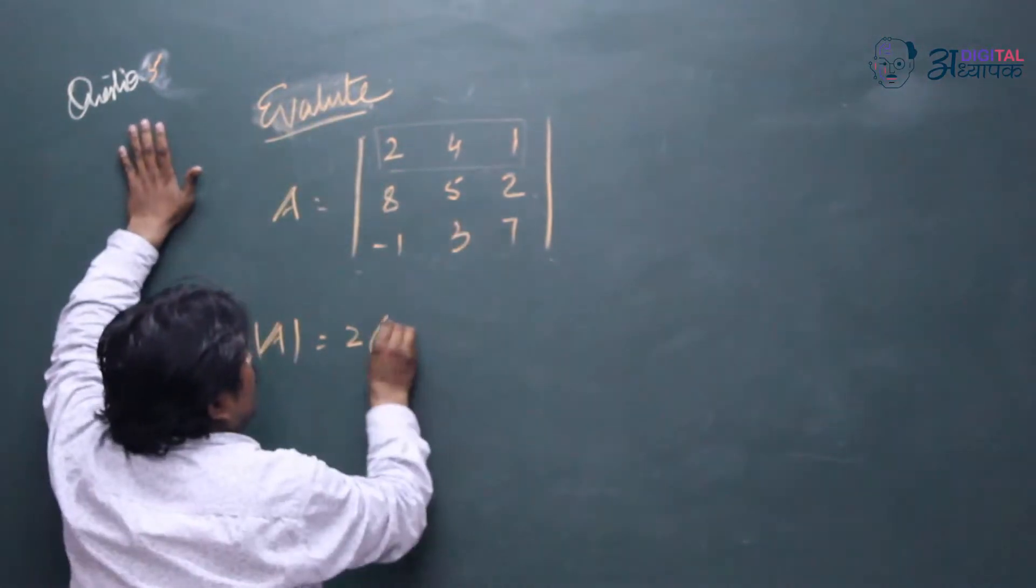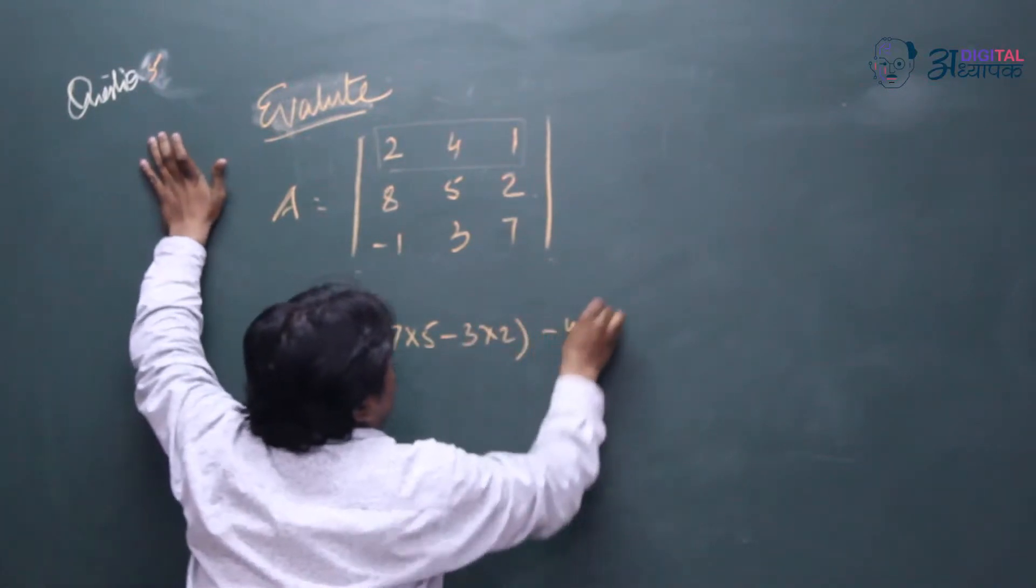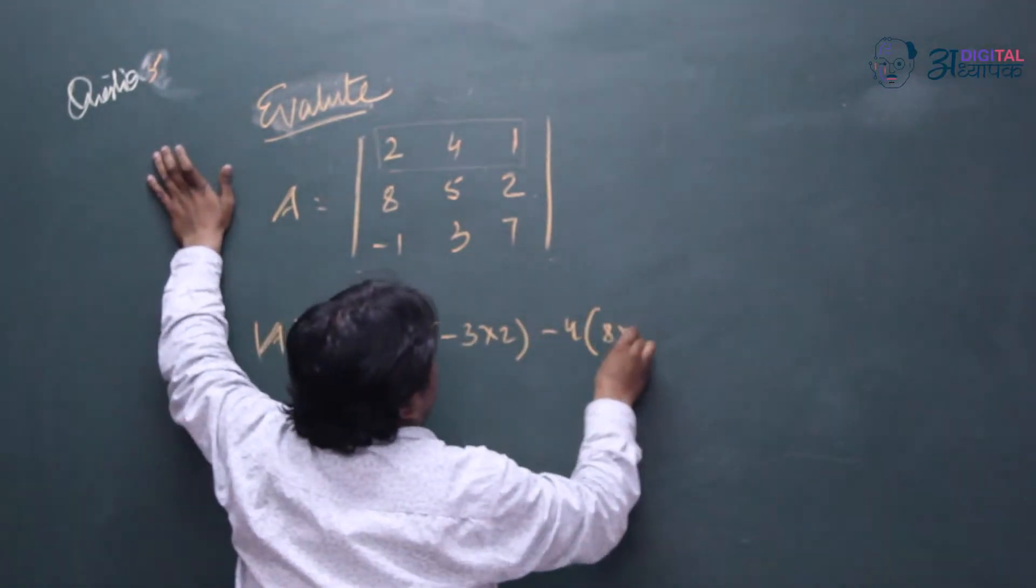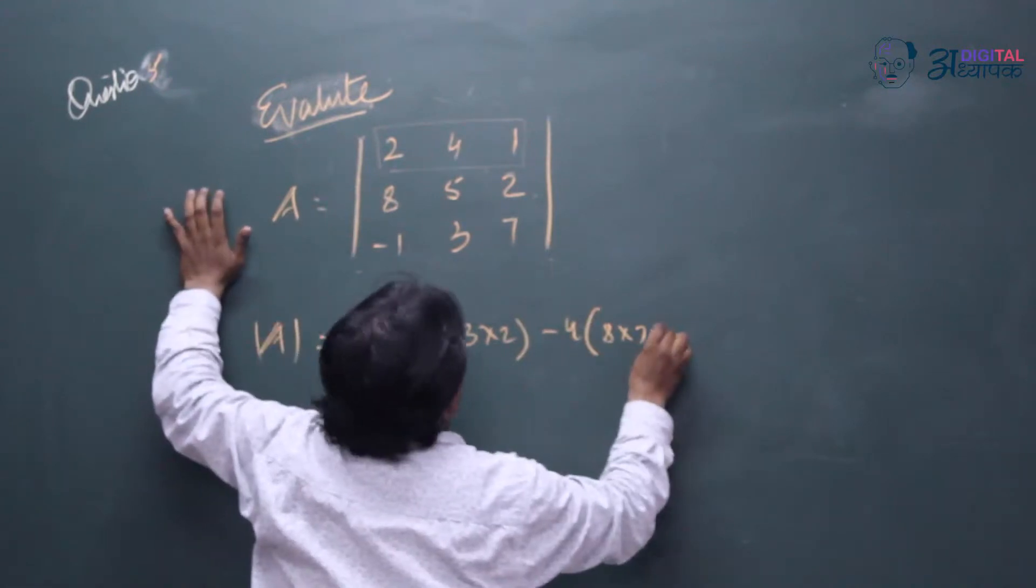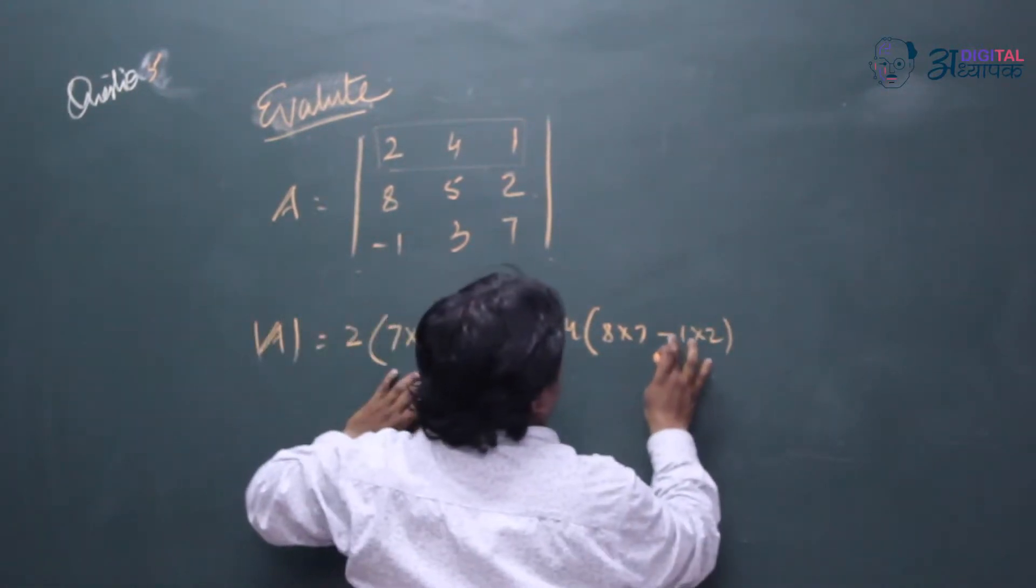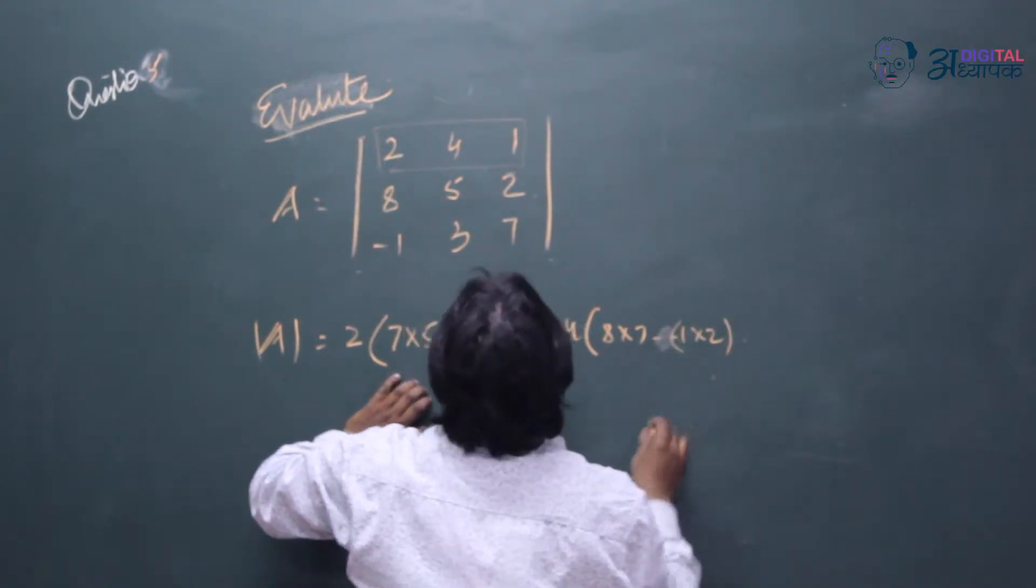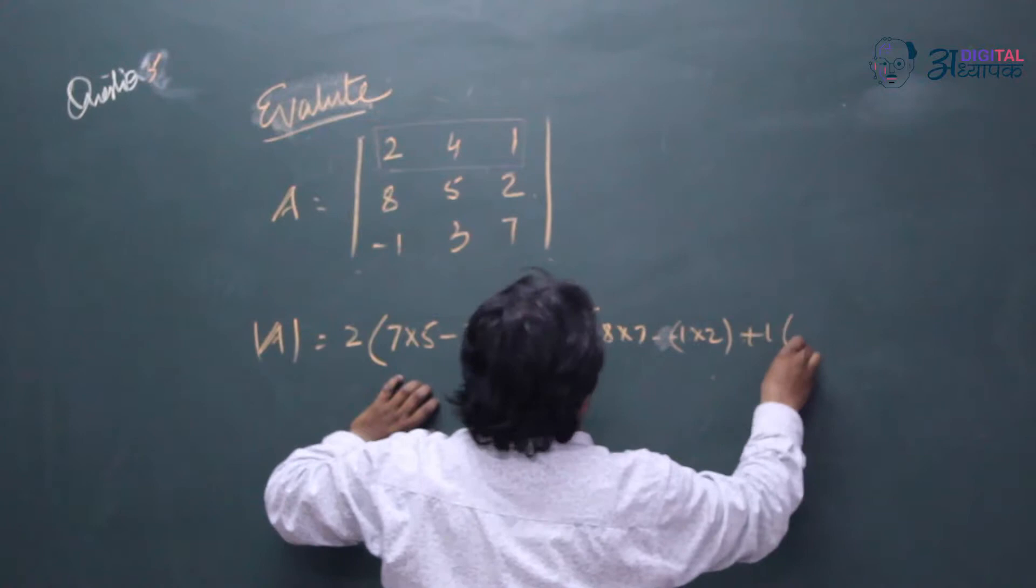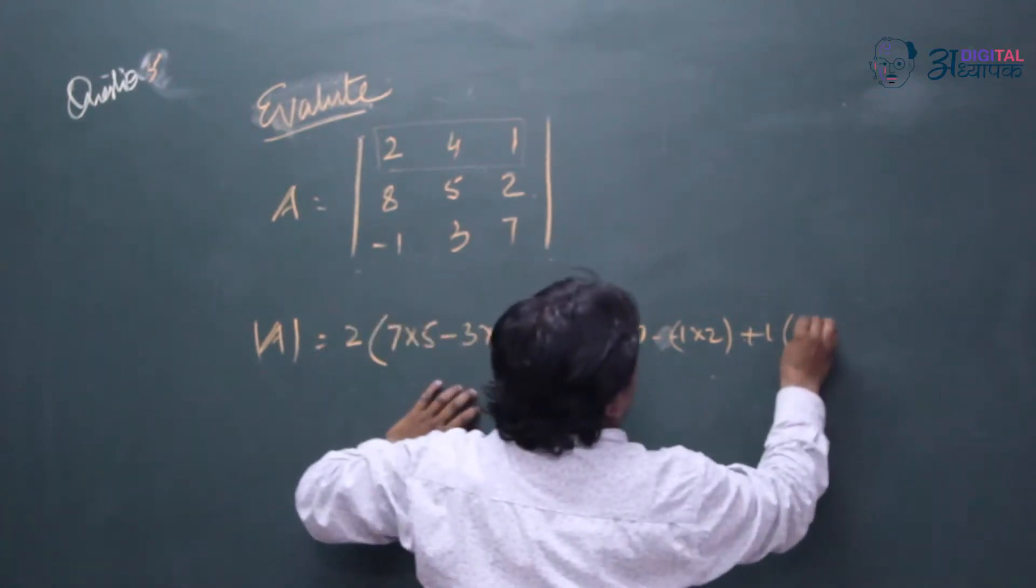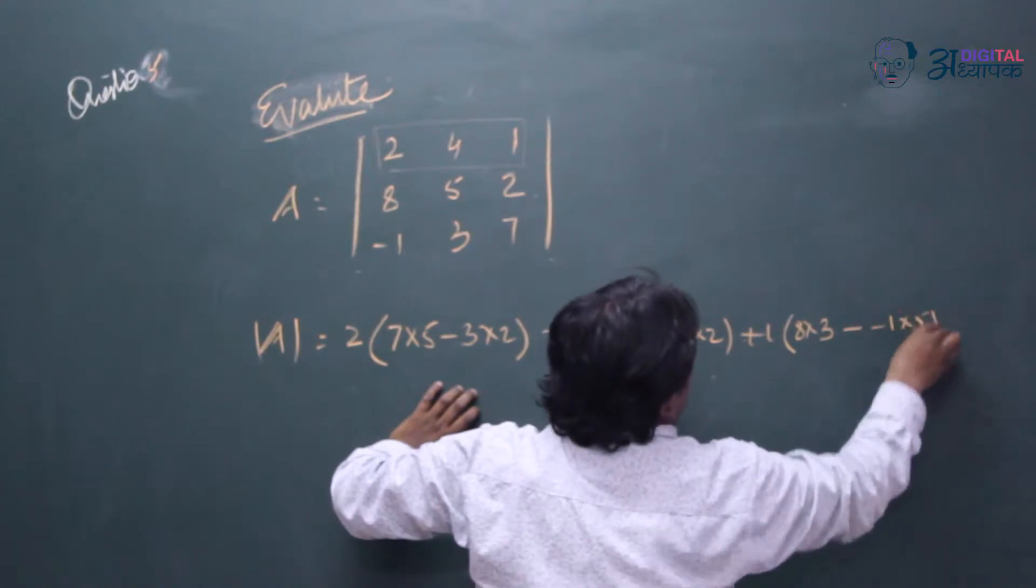So this is 7 into 5 minus 3 into 2, then minus 4 and this will be 8 into 7 and minus 1 into 2. And this will be minus and minus 1 into 3, then plus 1 and this will be 8 into 3 and minus minus 1 into 5.